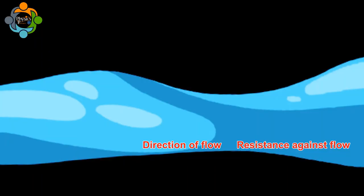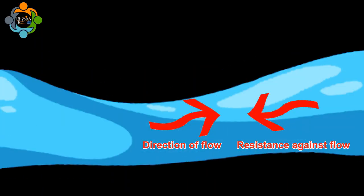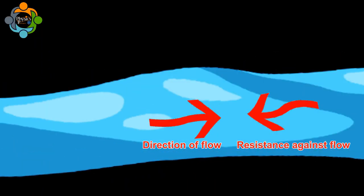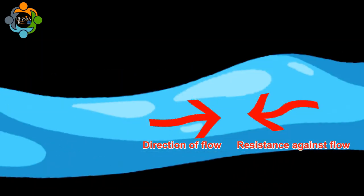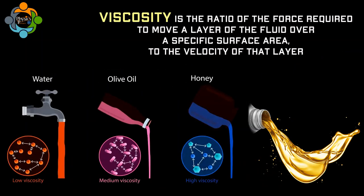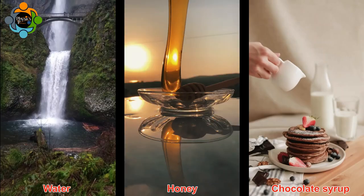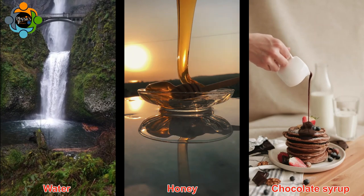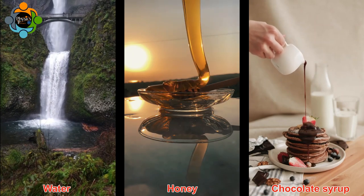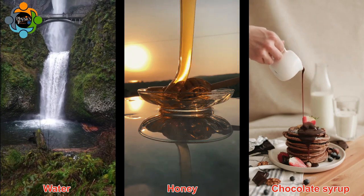Let's dive in a little deeper. In physics, viscosity can be defined as the measure of the resistance of a fluid to flow. To be more precise, it is defined as the ratio of the force required to move a layer of the fluid over a specific surface area to the velocity of that layer.